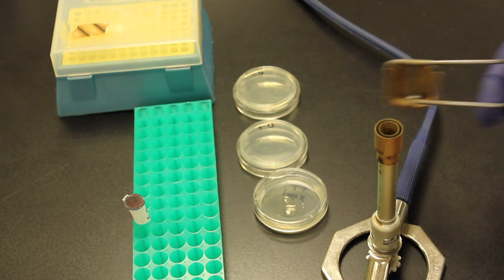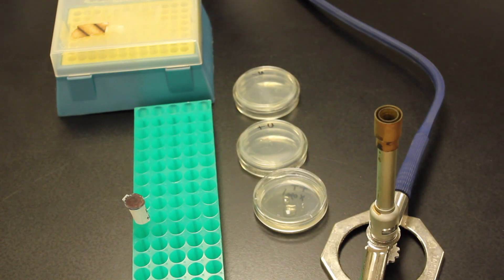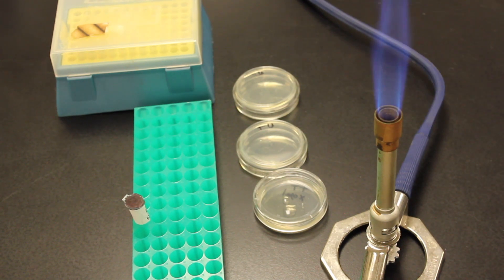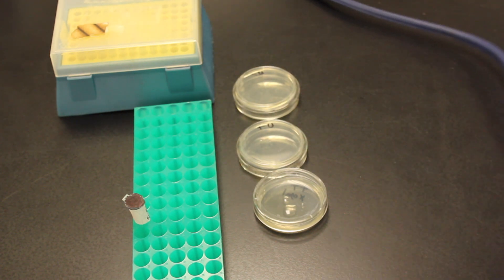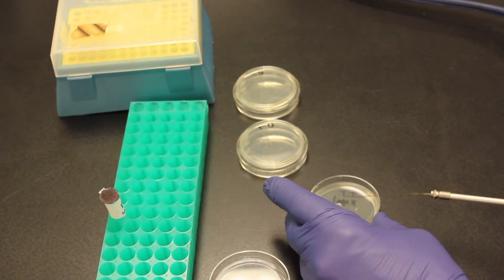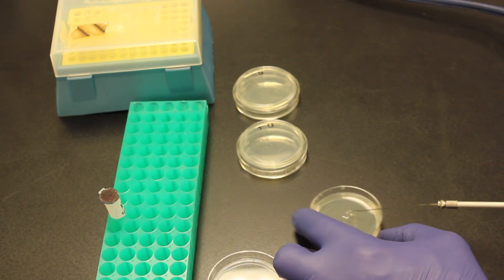Now what I want to do is I actually want to take a loop and spread it around the plate. So I'm going to light the Bunsen burner so that it is sterile and I don't get anything on my plate. I'll then take my loop, heat up my loop so that it is nice and bright. And then I'm just going to spread this around.